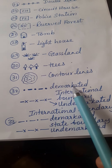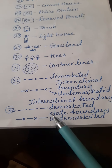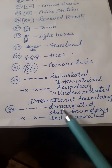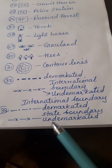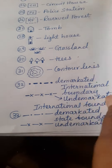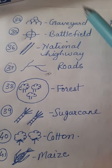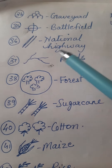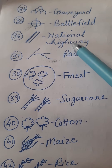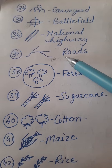One which is demarcated, and the other which is undemarcated. Similarly, for state boundary, there are two types: demarcated state boundary and undemarcated state boundary. This sign shows the graveyard. This is used to show the battlefield. This is used to show national highway. The small lines indicate roads on the map.